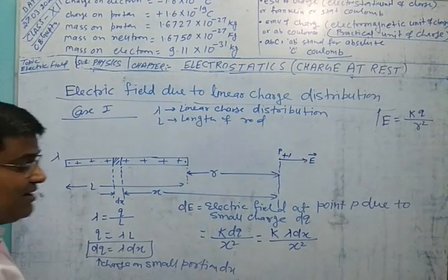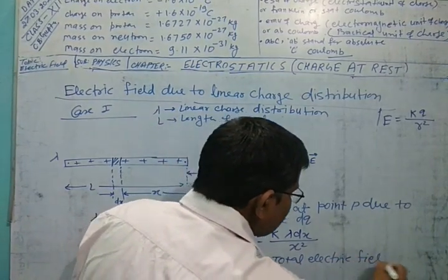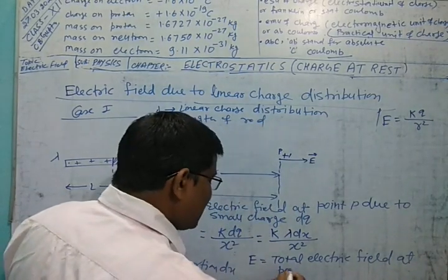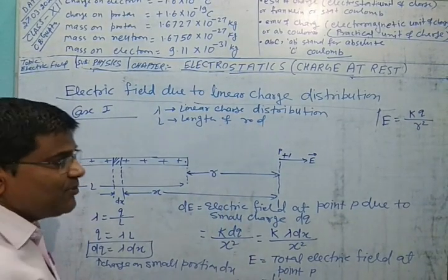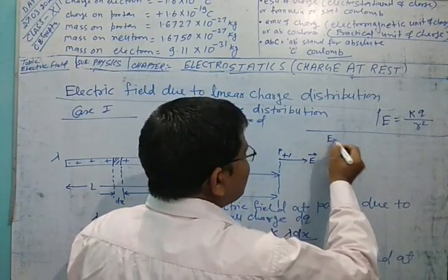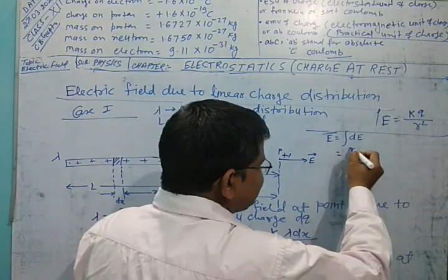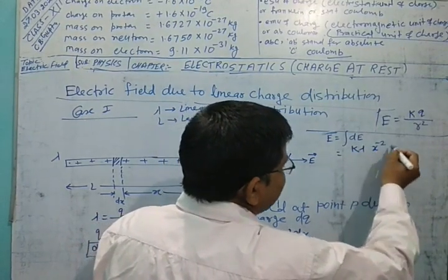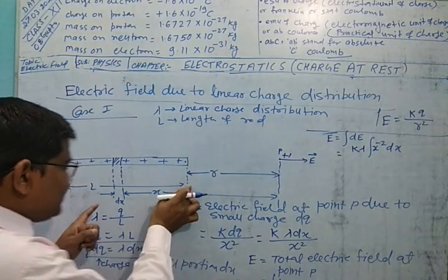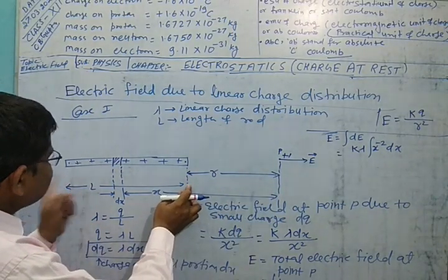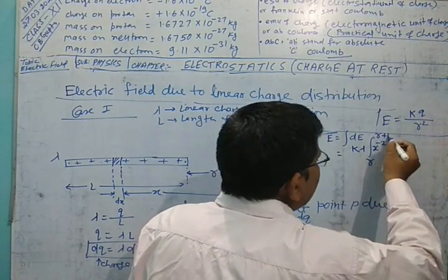The total electric field at point P equals the integration of DE, which is the integral of K times lambda times X to the power minus 2 times DX. The limits of integration run from the near end of the rod to the far end: from X equals R to X equals R plus L.